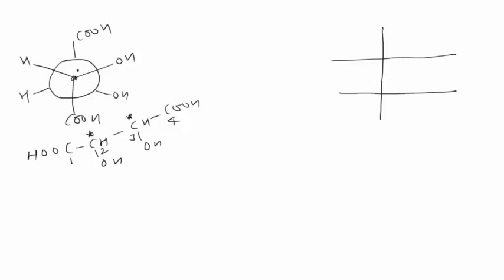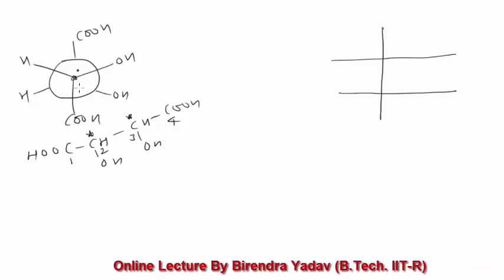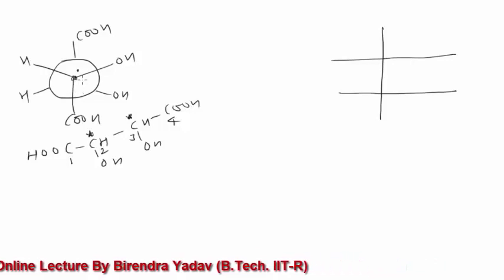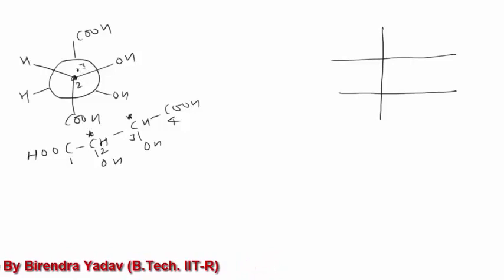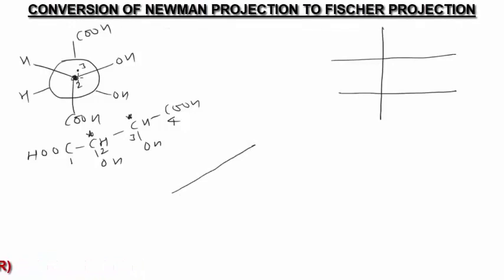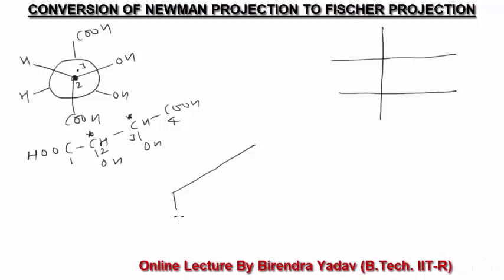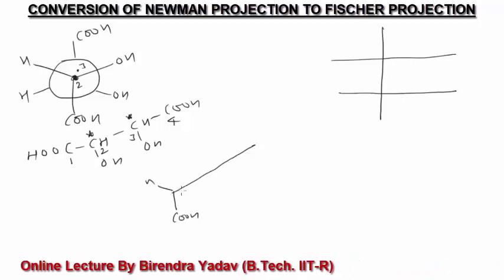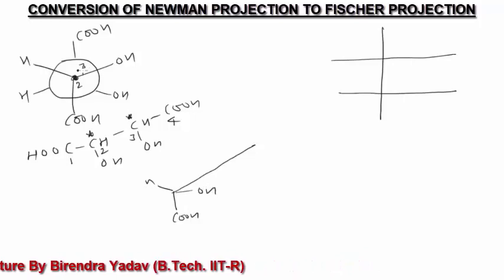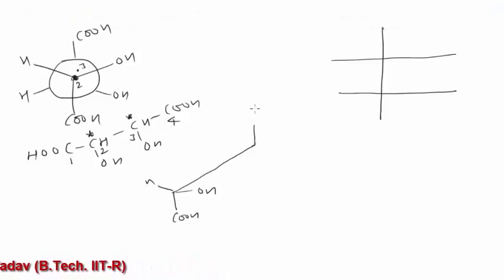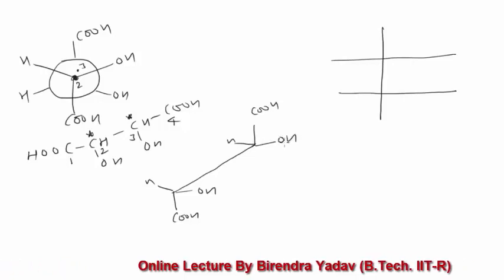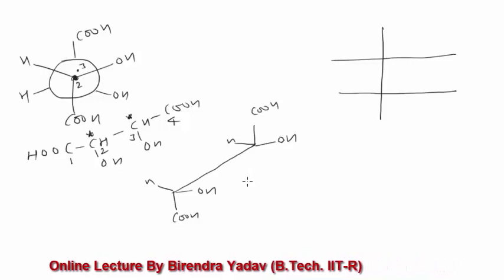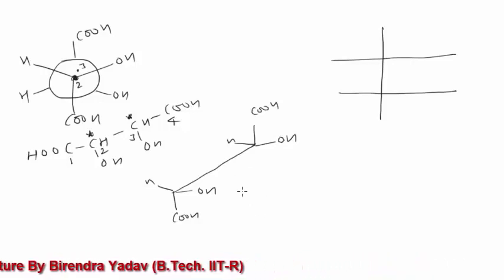To convert this Neumann projection into Fischer, first we have to convert this Neumann projection into Sawhorse projection. For that, just stretch the second carbon and third carbon like this. One important thing to keep in mind: if you want to convert Sawhorse into Fischer, then the Sawhorse must be in eclipsed form.